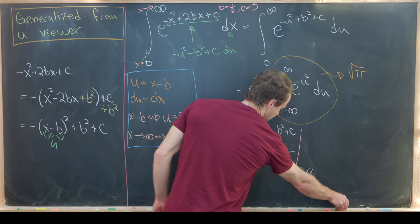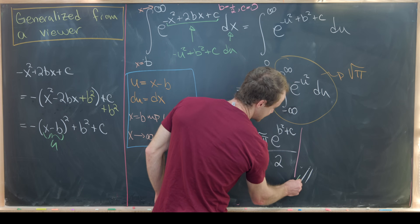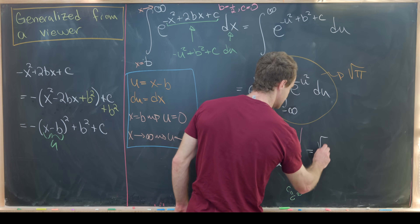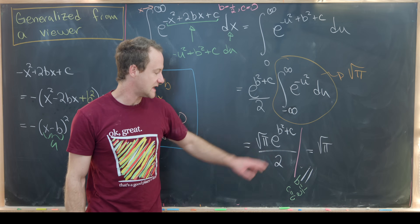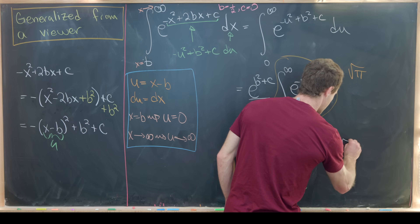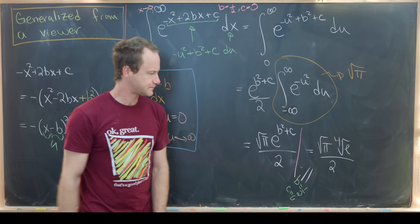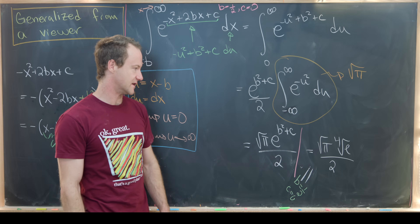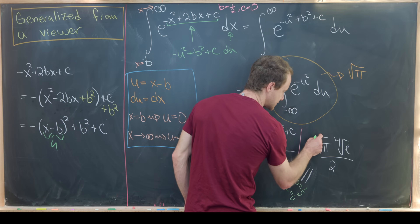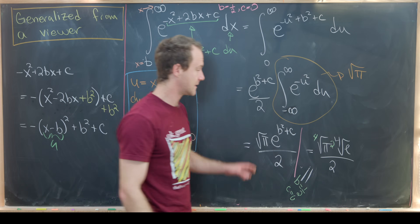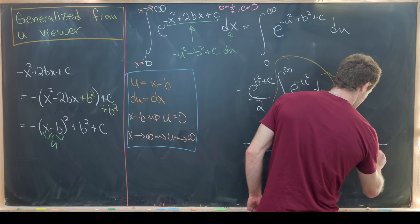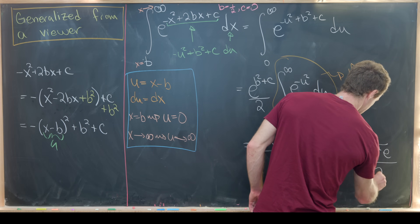We can easily calculate this case by setting b equal to one half and c equal to zero. That turns this into the square root of pi times e to the one half squared, which is e to the one quarter — the same as the fourth root of e — all over two. There's a nicer way to write this: take the square root of pi and turn it into a fourth root of pi squared, then combine those radicals to get the fourth root of pi squared times e, all over two.